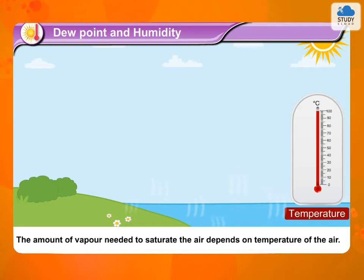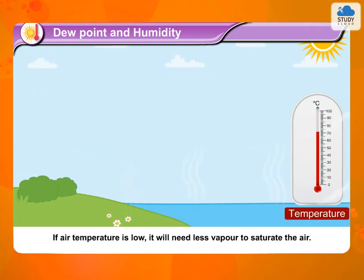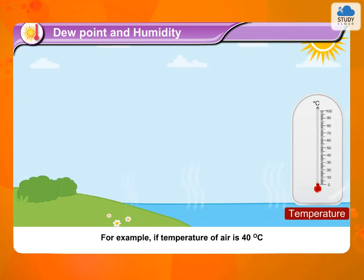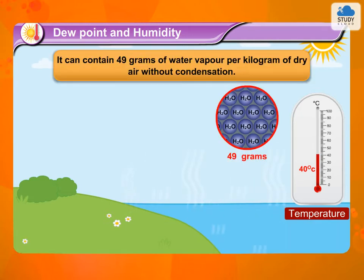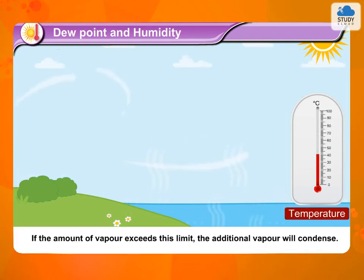The amount of vapor needed to saturate the air depends on the temperature of the air. If air temperature is low, it will need less vapor to saturate the air. For example, if the temperature of air is 40 degrees Celsius, it can contain 49 grams of water vapor per kilogram of dry air without condensation. If the amount of vapor exceeds this limit, the additional vapor will condense.